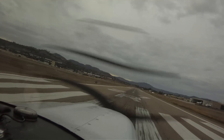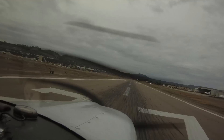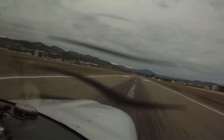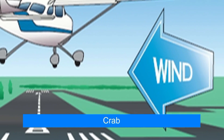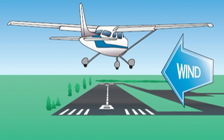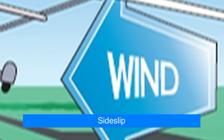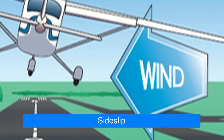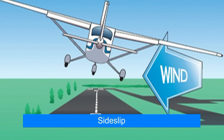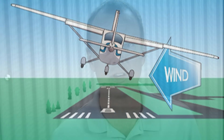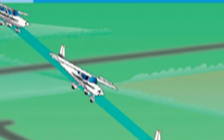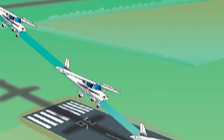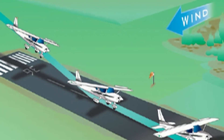Crosswind landings confound and perplex some pilots and most of us don't practice them as much as we probably should. You may have heard of two methods of crosswind landings: the crab and the sideslip. As you're always going to end up doing a sideslip when you're right over the runway, I teach only that method. In the real world I don't want to wait until I'm over the runway to find out I don't have enough rudder authority to land the airplane in a crosswind, which is what might happen if you're still crabbing on final. The sideslip gives me better information about how strong the wind is and whether it's gusting or shearing as I come down on final.